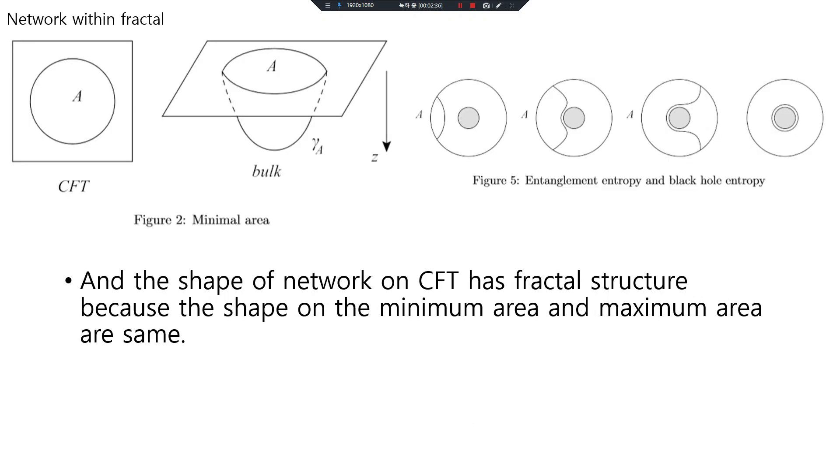The shape of the network has fractal structure because the shape at minimum area and maximum entanglement entropy is the same.